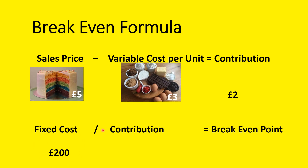We're going to divide the fixed costs by the contribution, which is two pounds. So what this really means is each cake I sell gives me two pounds. I'm finding out how many cakes I need to sell. So I take my 200 pounds, I divide it by the two pound contribution, and this will give me: I will break even if I sell 100 cakes.